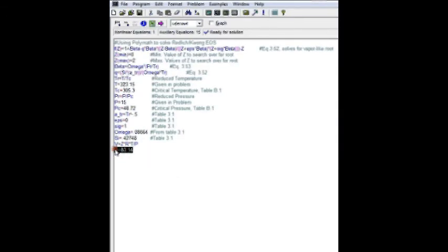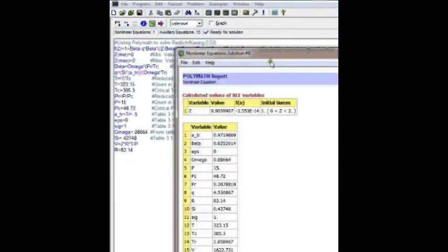Now, if I forget to define a variable in Polymath, it will tell me up here that I have an undefined variable, and it will not let me solve. So it will tell you if you're not ready for a solution. So I type in R equals 83.14, and then it tells me it's ready, so I hit the pink arrow.